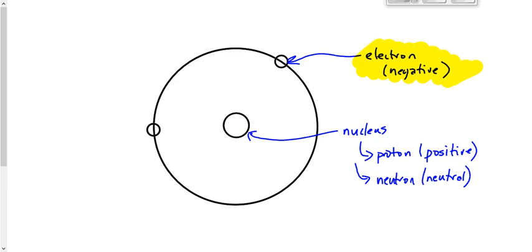It's the electrons that orbit around the nucleus that we're dealing with in this unit. Whenever there's an interaction between two things, it's going to be electrons that are interacting. These electrons are bound to the nucleus by what's called an electric force — the electrostatic force. Positive attracts negative. The nucleus is positive, the electrons are negative, they attract each other. But that force can be broken, and therefore things can happen to these electrons that provide us with electrical interactions.